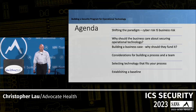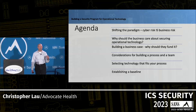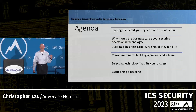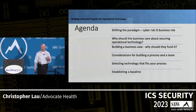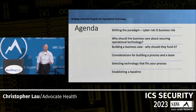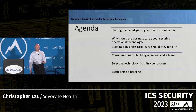Today I want to take you through a journey, and it starts with the process I use. I'm a process guy — I would probably spreadsheet the grocery list if I could. It starts with a methodology, shifting the paradigm. Cyber risk is business risk, but it's often not communicated like that. Why should the business care — not just about operational technology, but about the security of it, and how to build a business case?